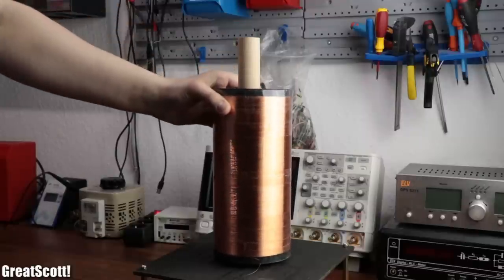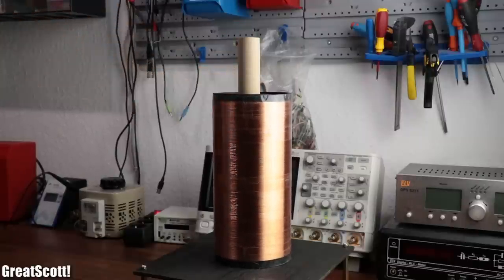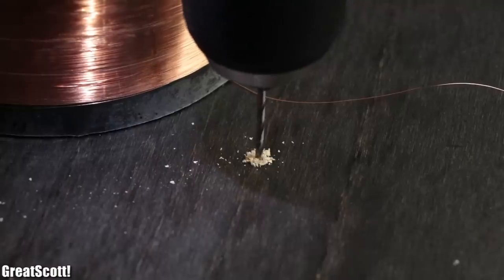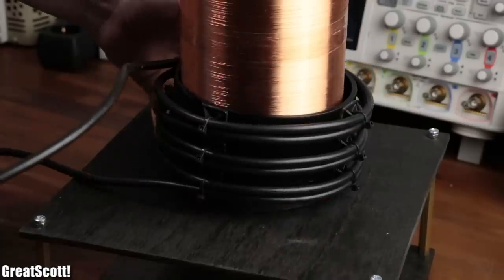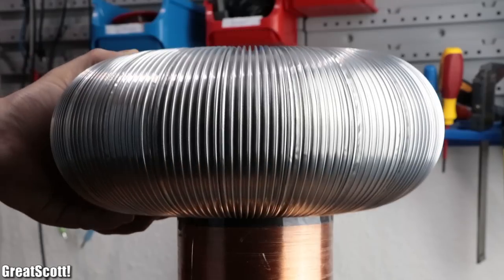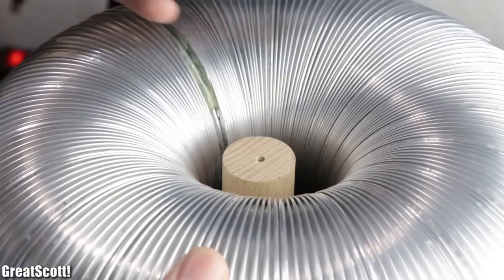After positioning the secondary coil on top of the platform, I drilled a 1 millimeter hole next to it so that its ground wire can be pushed through. Once I then slid on the primary coil, it was time to position the top load.